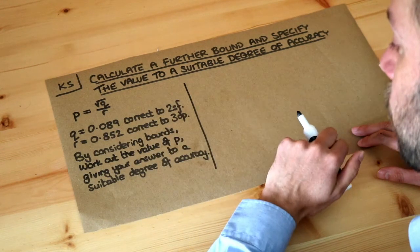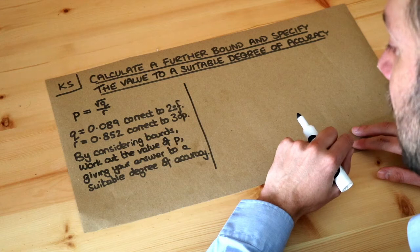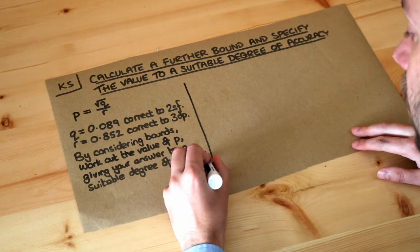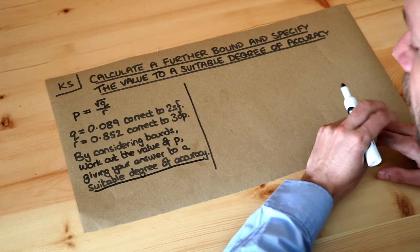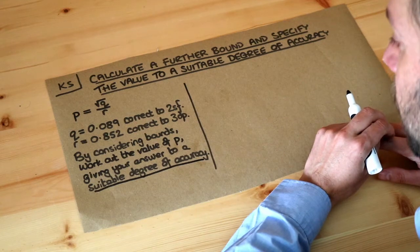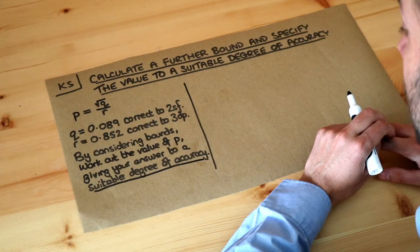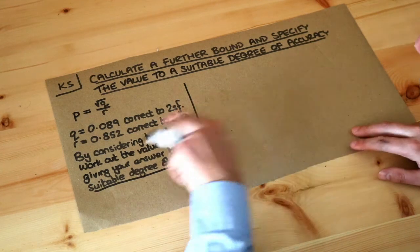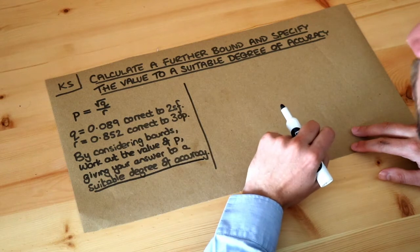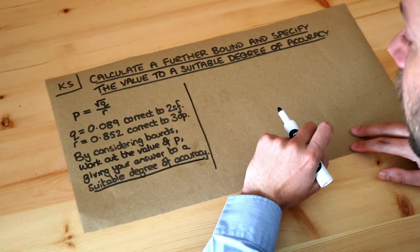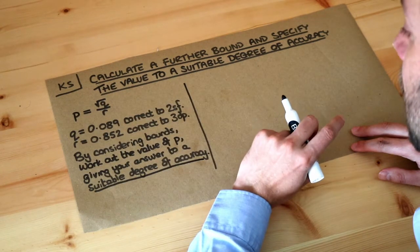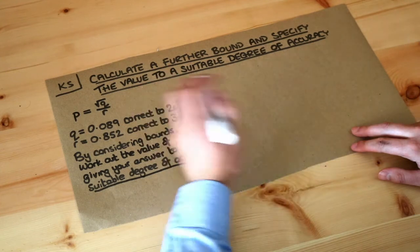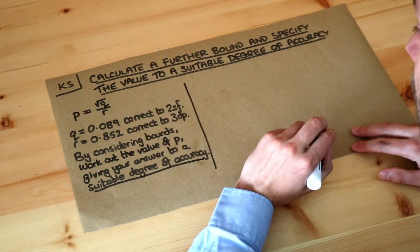By considering bounds, work out the value of P giving your answer to a suitable degree of accuracy. Those are the magic words — suitable degree of accuracy — what does that mean? Well, it does say 'by considering bounds', so we should probably work out first the lower bound and the upper bound of P, as shown in a previous video.